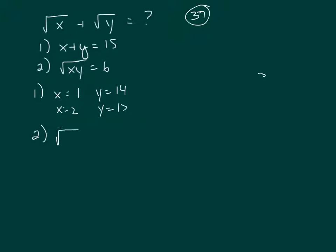Clue 2, the square root of xy equals 6. Same deal. That means you could have 3 and 2, or you could have negative 3 and negative 2, or you could have 1 and 6, negative 1 and negative 6. That doesn't work. So neither 1 work independently.